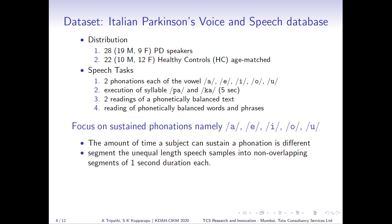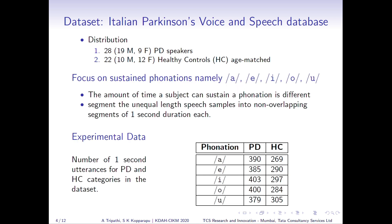The focus of this work is on the sustained phonation task. Each of the five sustained phonations is used to identify whether the speech comes from a PD person or a healthy control. Since the duration a person can sustain a phonation varies, the audio files are segmented into non-overlapping one-second segments. For phonation 'a', this yields 390 PD utterances and 269 healthy control utterances, with similar distributions for other phonations.